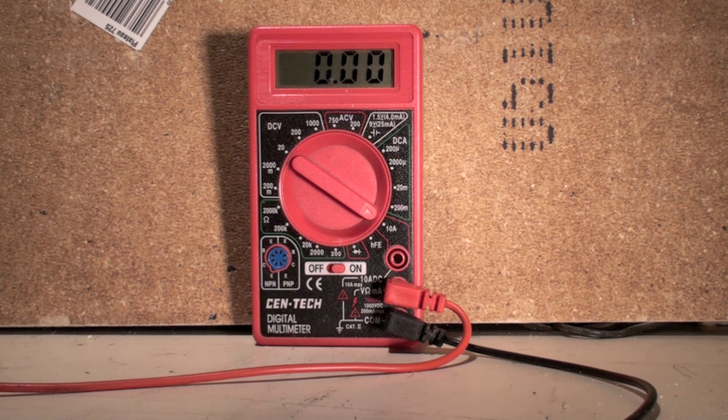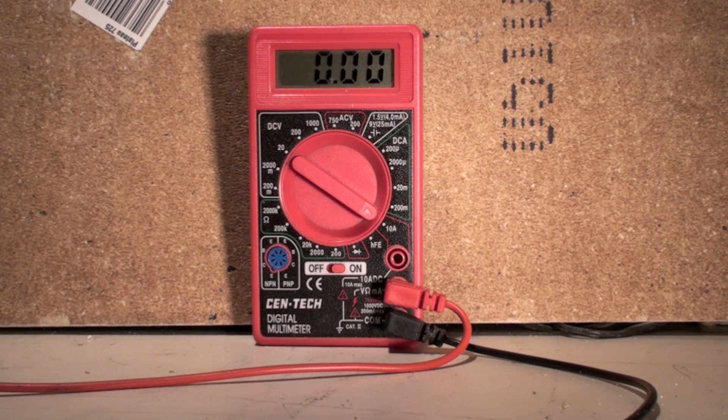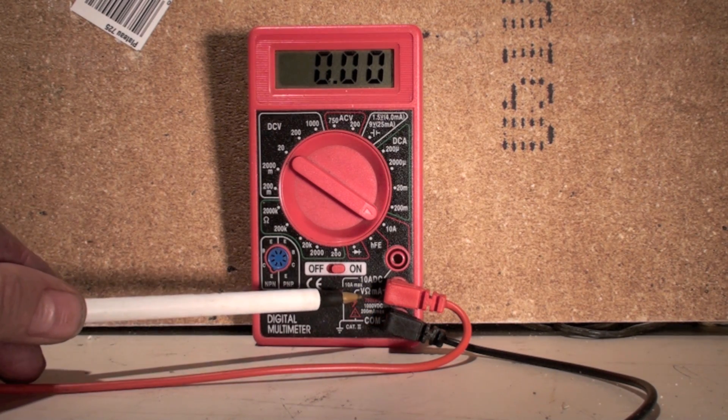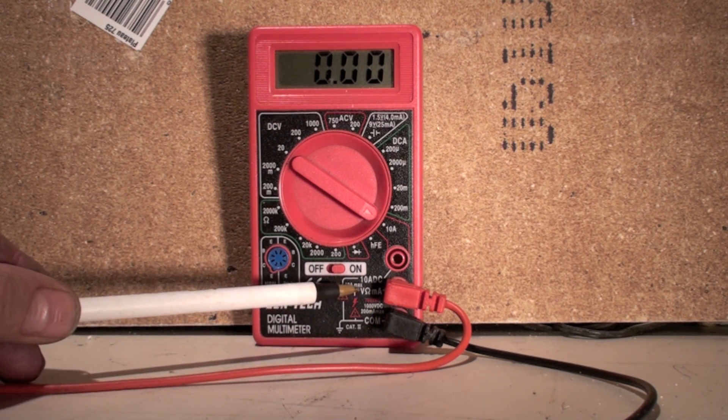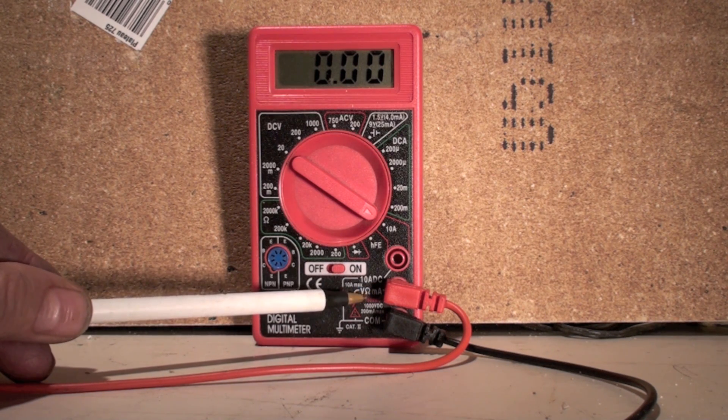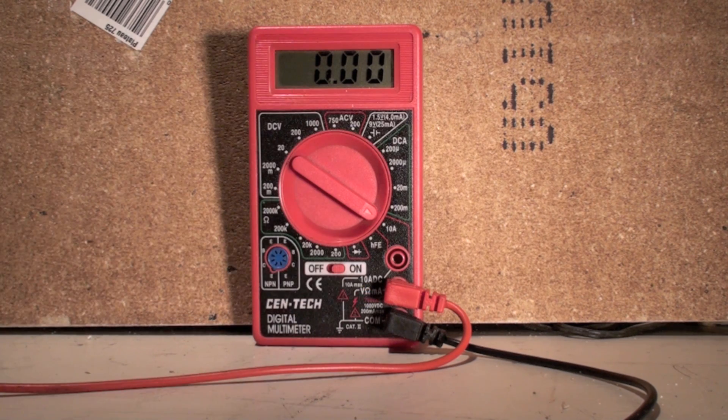The highest one we have is 10 amps. If we put the common in the common - common always stays in common - then we've got three little connections here: V for volts, the thing that looks like a little light bulb which is ohms or resistance, and the other one is mA which means milliamps.